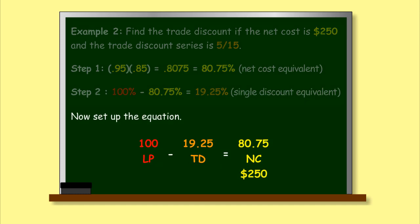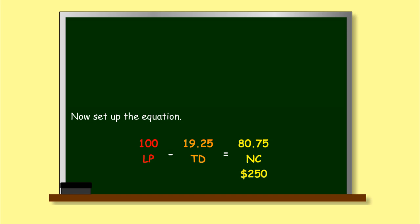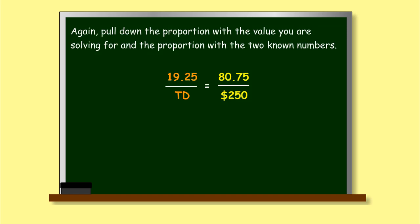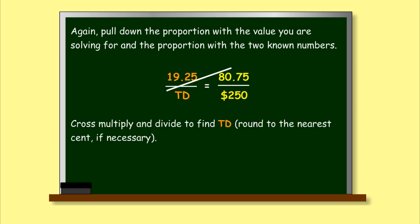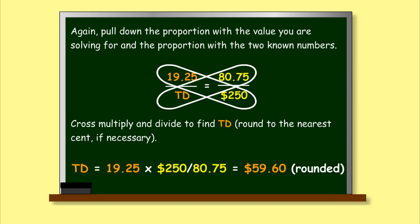Now set up the equation. Again, pull down the proportion with the value you are solving for and the proportion with the two known numbers. Cross multiply and divide to find TD, and round to the nearest cent if necessary. TD equals $59.60.